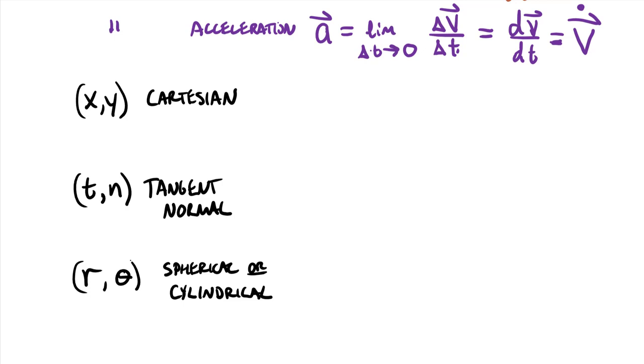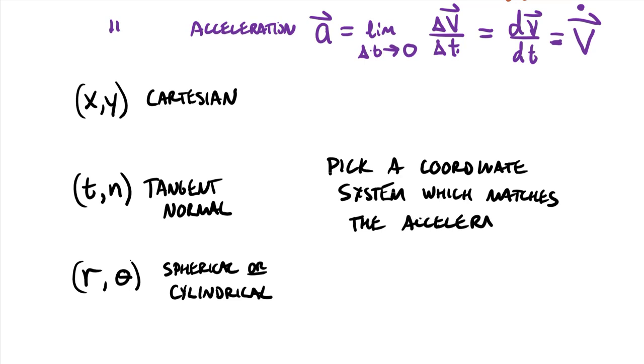So you might be wondering which coordinate system that you should choose, given a certain kind of problem. And we'll spend a fair bit of time talking about this in some of the videos and have probably some interactives on it. But fundamentally, you want to pick a coordinate system which matches the acceleration. So the reason that you want to match the acceleration of a problem is that the acceleration fundamentally governs how the motion is happening. So one of the simplest types of acceleration we'll deal with in this class actually falls into Cartesian coordinates. And that's going to be gravitational acceleration.